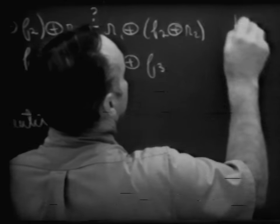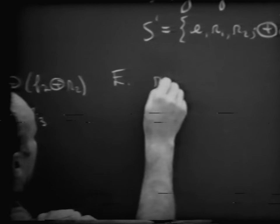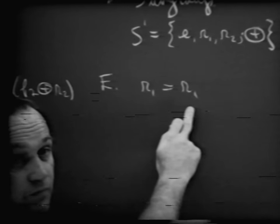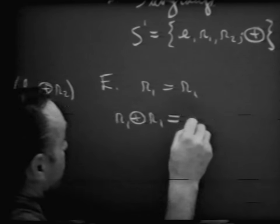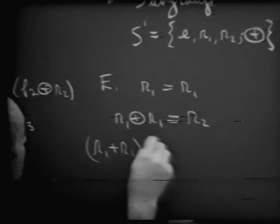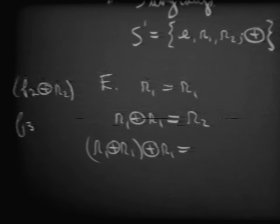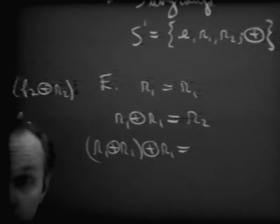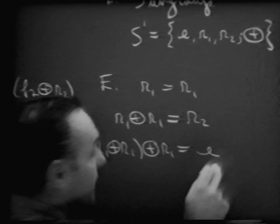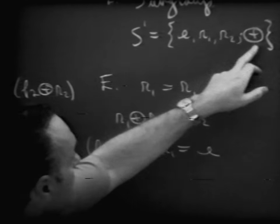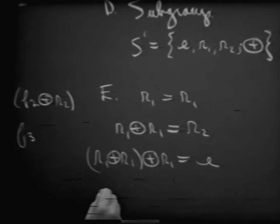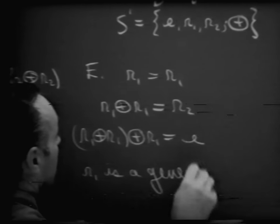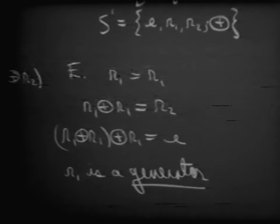Let's see what other properties we may have. Suppose we take R sub 1 — certainly R sub 1 equals itself. R sub 1 followed by R sub 1 is R sub 2. And R sub 1 followed by R sub 1 followed by R sub 1 is equal to E — you're right back to where you started from. Notice in our little subgroup, R sub 1 generated every element in the set. We refer to R sub 1 as a generator — a generator generates every element in that set.